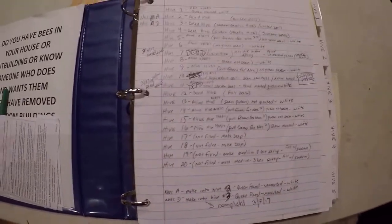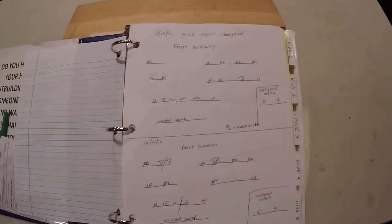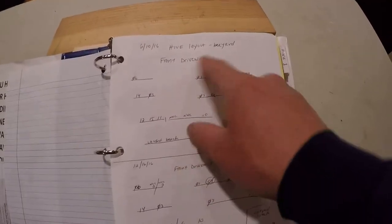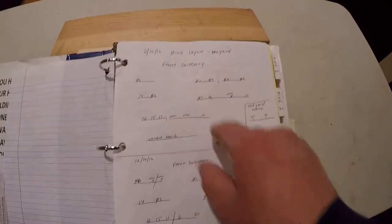To talk about the notes I keep, first thing is I keep a map of my hives. This was made back in June of 2016. I lay out my front driveway. Something that's a solid reference point, especially with your bee yard, what's out there.